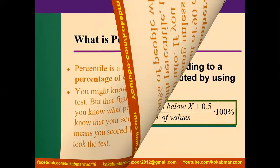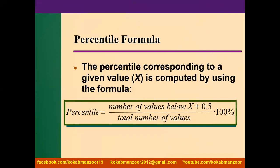How to calculate it? The formula is: number of values below X, plus 0.5, divided by the total number of values, multiplied by 100 percent. Let's solve an example so it will clear all your doubts.